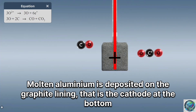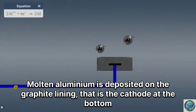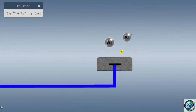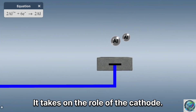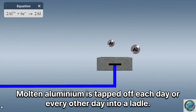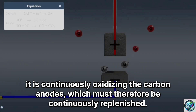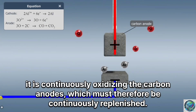Molten aluminium is deposited on the graphite lining, that is, the cathode, at the bottom of the tank. Molten aluminium is tapped off each day or every other day into a ladle. Since the oxygen is collecting at the positively charged electrodes, it is continuously oxidizing the carbon anodes, which must therefore be continuously replenished.